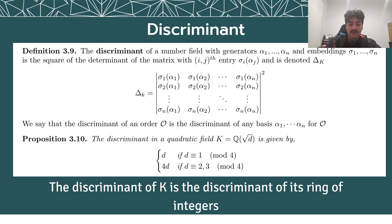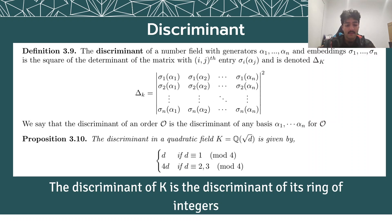The next tool we'll look at is the discriminant. An embedding is an injective homomorphism from k to the algebraic closure of Q. If alpha_1 to alpha_n is a basis for k, then the discriminant is the square of the determinant of the matrix with (i,j)-th entry sigma_i(alpha_j), where the sigmas are the embeddings of k. The discriminant of k is equal to the discriminant of its ring of integers, which is calculated using a basis for the ring of integers.